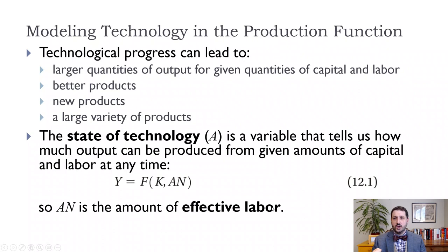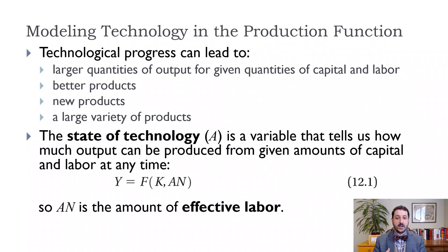So how do we model technological progress? By technological progress in economics, what we mean is anything that allows us to produce more with fewer inputs. Our major inputs are capital and labor, and there are a couple of ways to think about how we might model this improvement in technological progress.